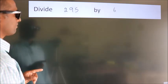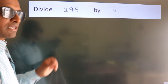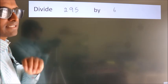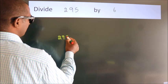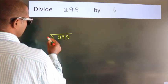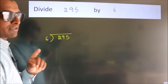Divide 295 by 6. To do this division, we should frame it in this way: 295 here, 6 here. This is your step 1.